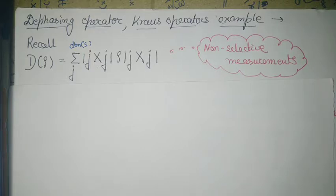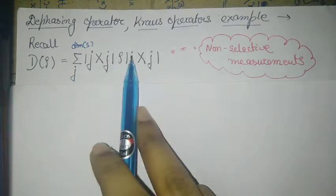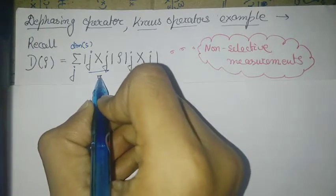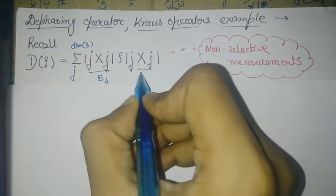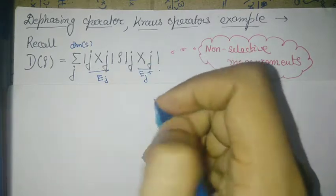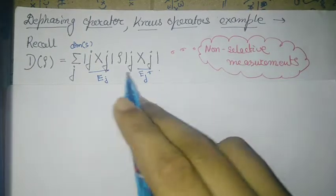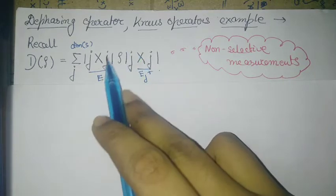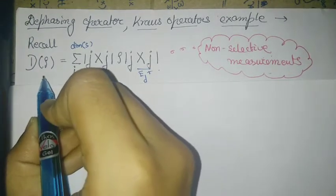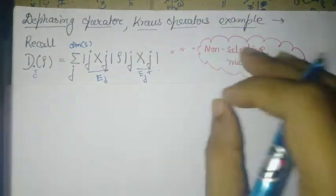In the previous video I discussed that this is a dephasing operator, where the |j⟩⟨j| terms form an orthonormal basis set and can be regarded as Kraus operators. Looking at the form of these Kraus operators Ej and Ej†, it is clear that in this set the Kraus operators coincide with the projectors. When the Kraus operators and the projectors are one and the same, these correspond to non-selective measurements, so dephasing in a particular basis is just a non-selective measurement in that basis.